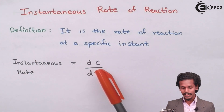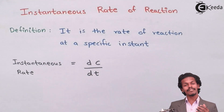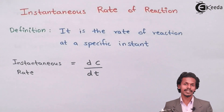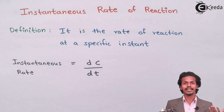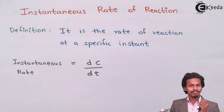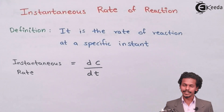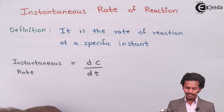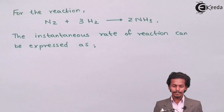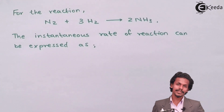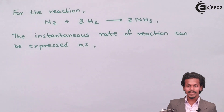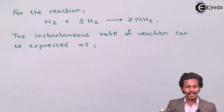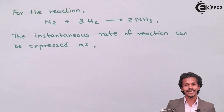The instantaneous rate of reaction equals dc/dt, where small d represents an infinitesimally small difference in concentration divided by an infinitesimally small difference in time at a particular instant. As an example, consider the reaction: N₂ + 3H₂ → 2NH₃. The stoichiometric values are given in the reaction.